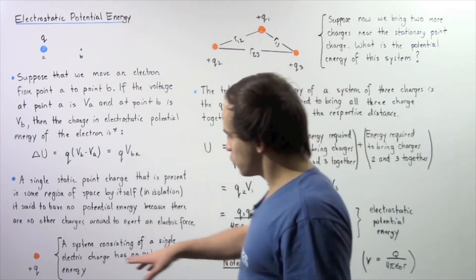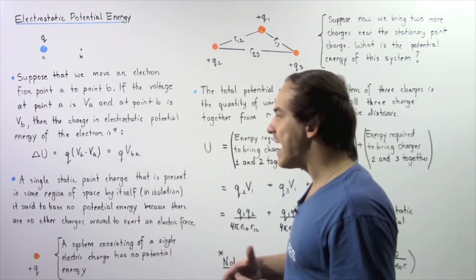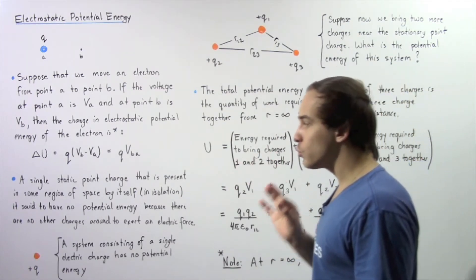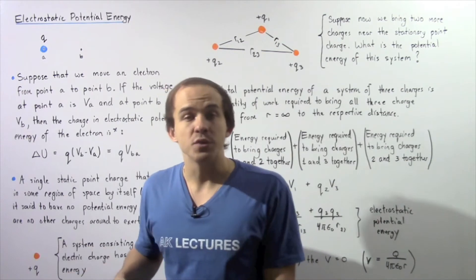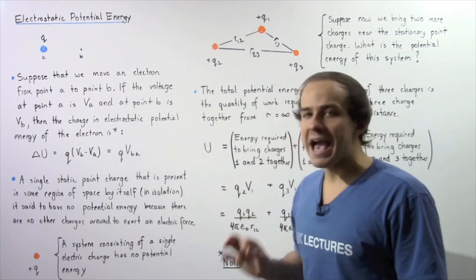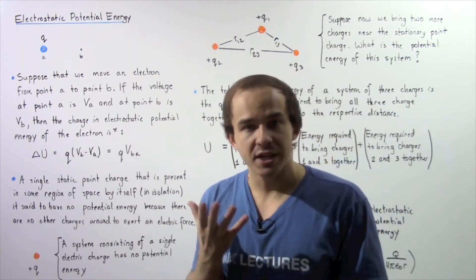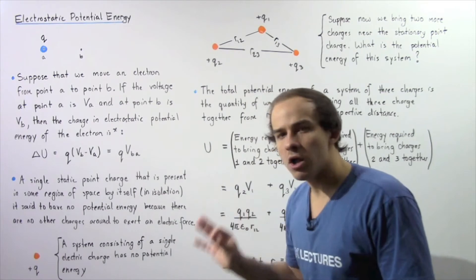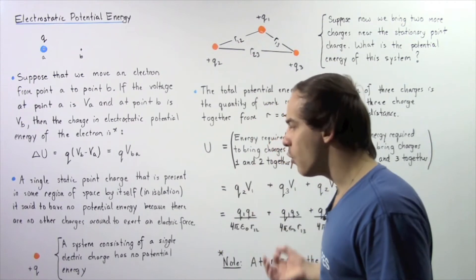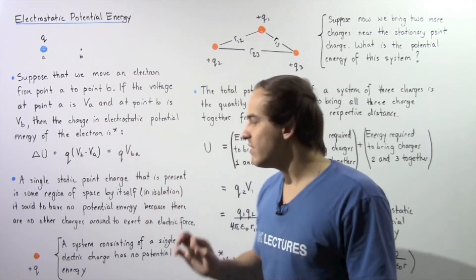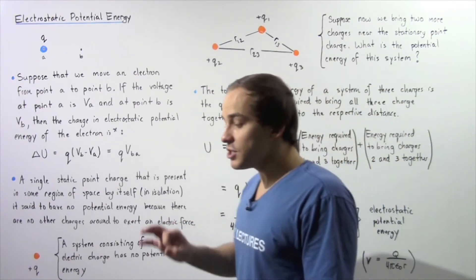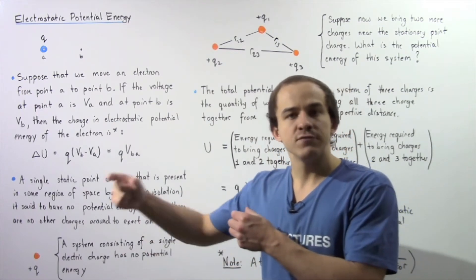Now let's suppose we have a scenario in which we have a single static point charge that is present in some region of space all by itself — so it's completely isolated. In such a case, it is said to have no electrostatic potential energy, because there are no other electric charges present in close proximity to exert an electric force. A system consisting of a single electric charge has no potential energy because we define potential energy relative to other electric charges.